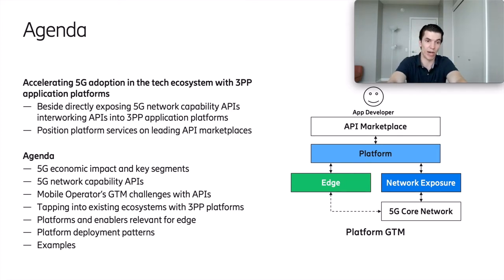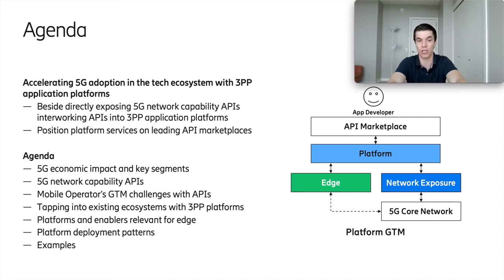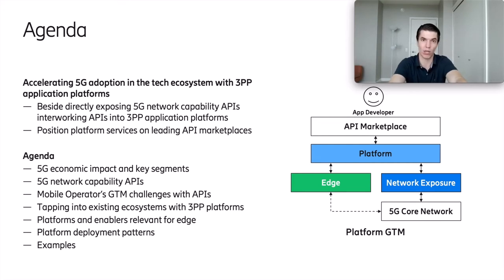Today, first we will go through the 5G economic impact and key segments to set the stage, then discuss the network capability APIs which are relevant for edge and 5G application developments, then discuss the mobile operators' go-to-market challenges with these APIs and how tapping into the existing ecosystems with third-party platforms can potentially mitigate these challenges. Then we will discuss an overview of the platforms and enablers relevant for 5G and edge, the typical integration patterns, and some examples in detail.